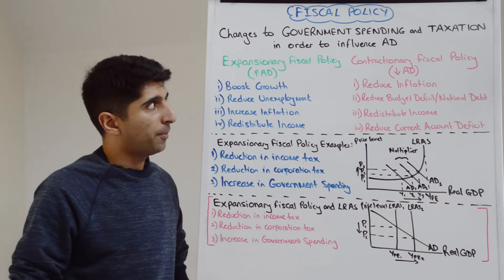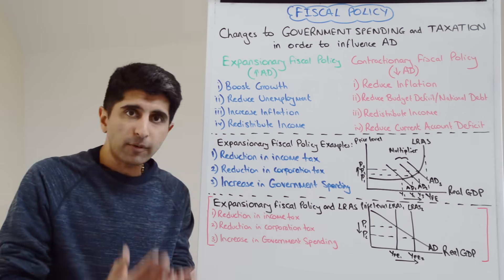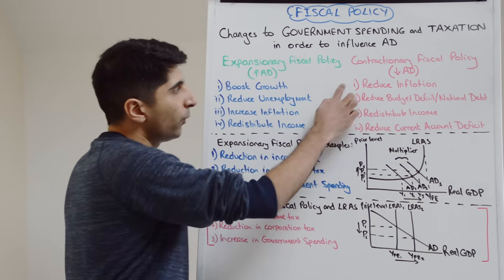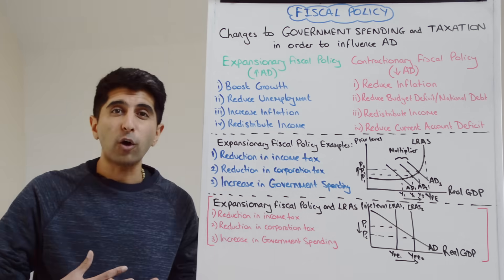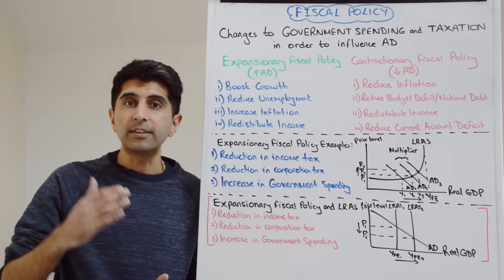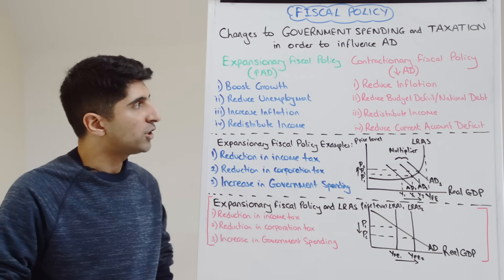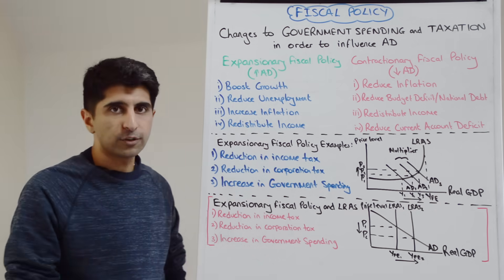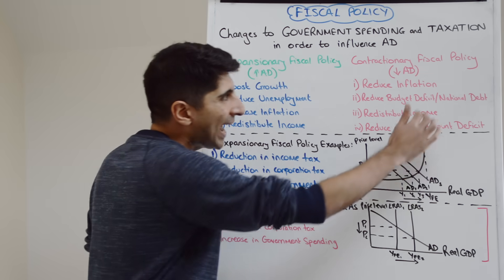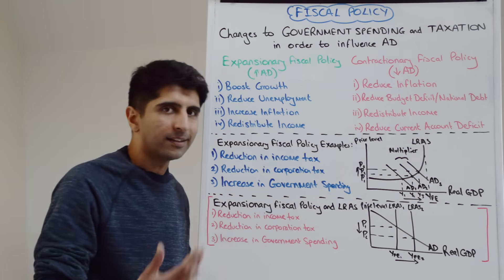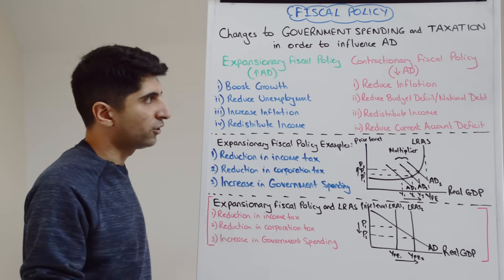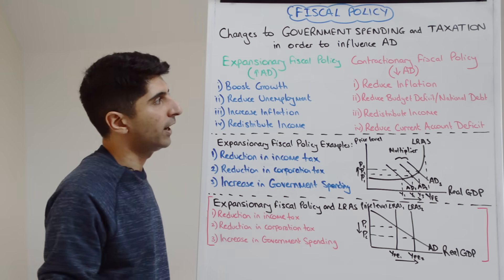What about contractionary fiscal policy? Well, this is all about reducing AD. Why might the government want to do that? The first reason would be to cool the economy down. If the economy is overheating, we have high rates of demand-pull inflation, and reductions in AD via fiscal policy can help to reduce that. Again, in theory we can say that, but not in reality because it's a central bank's job to control inflation and hit the inflation target.